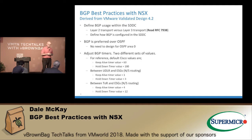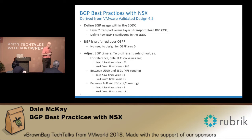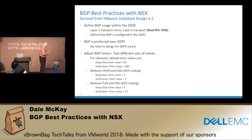There are actually two different sets of values. There's a set of values between the top of the rack and the ESGs, and then a different set of values between the UDLR and the ESG. Edge Service Gateway, Universal Distributed Logical Router — everybody knows what those mean.